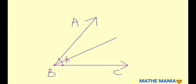This ray which we get is the angle bisector and it divides the angle into two equal parts.